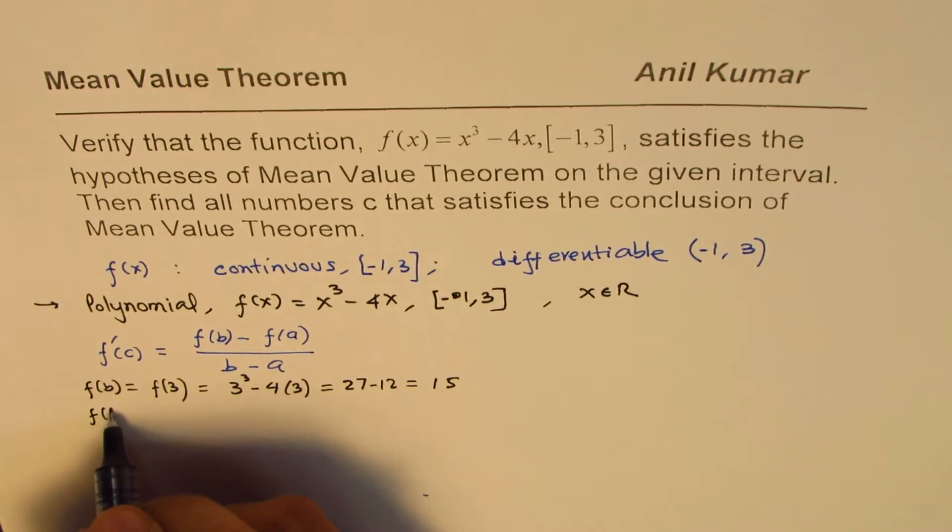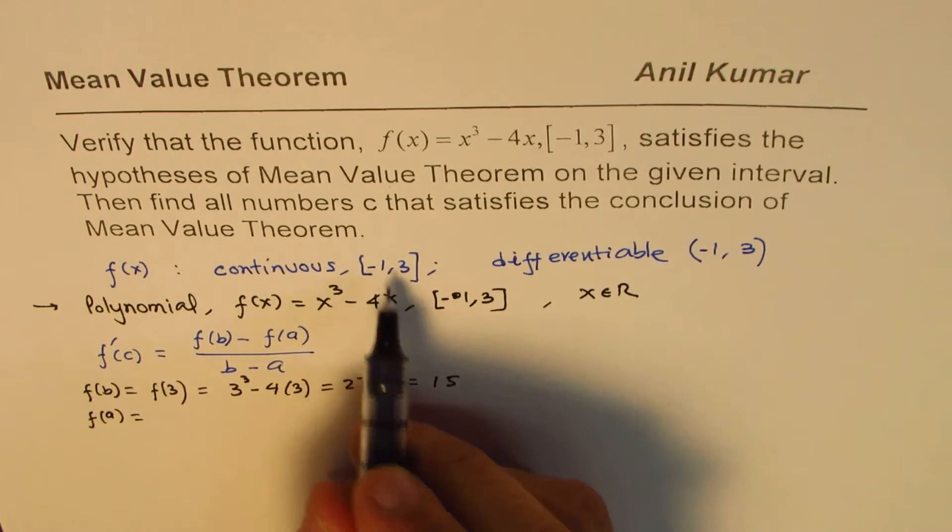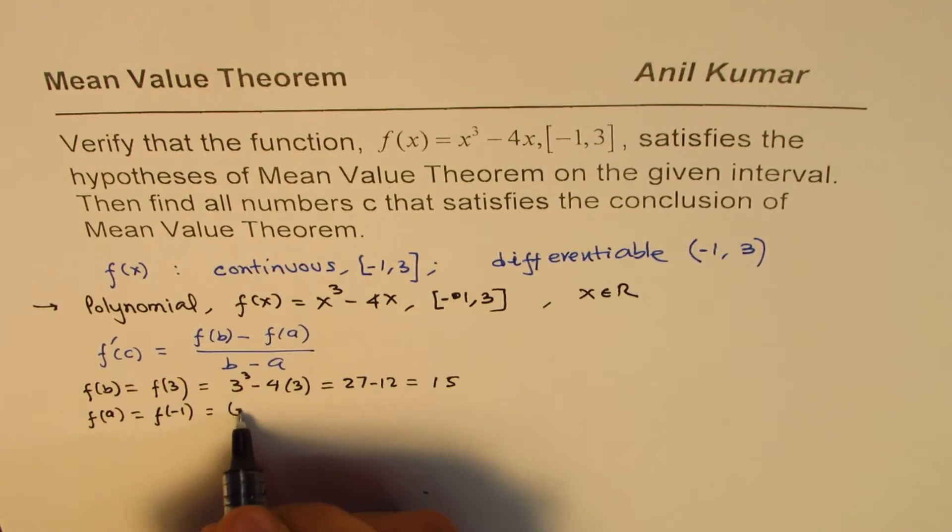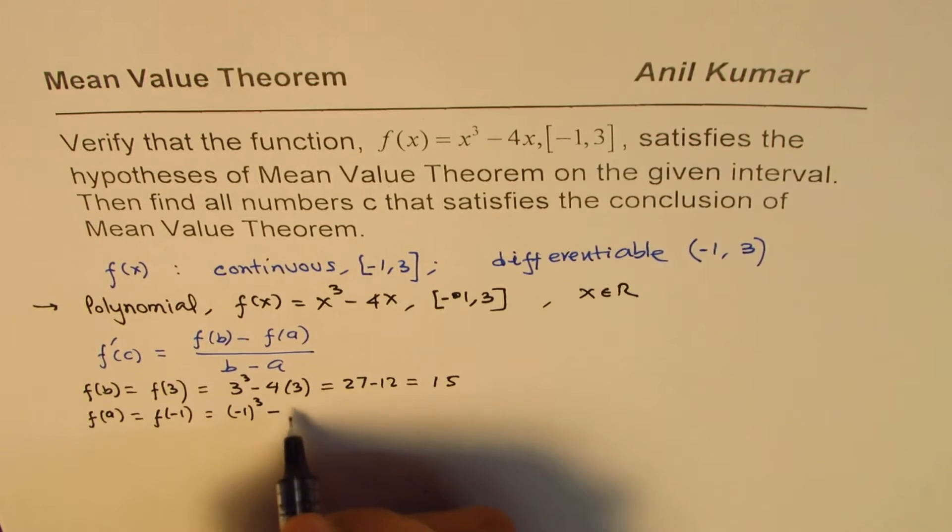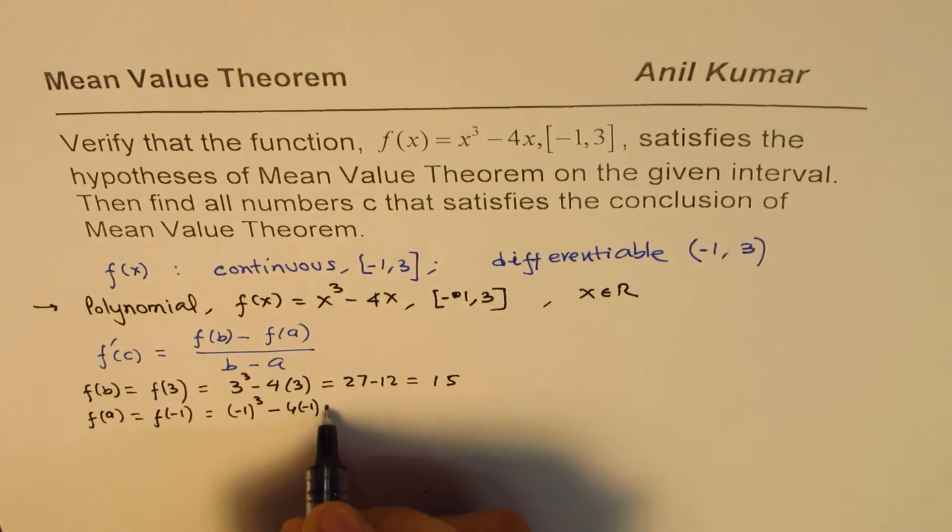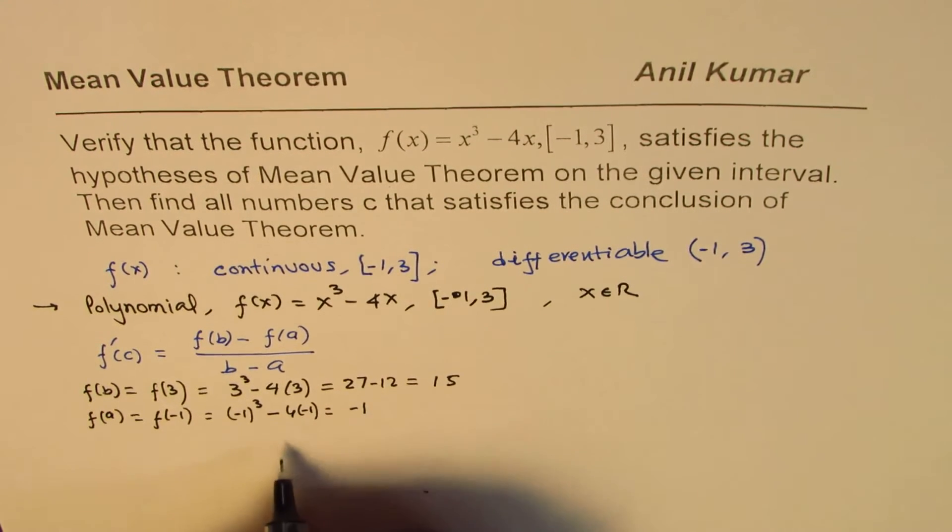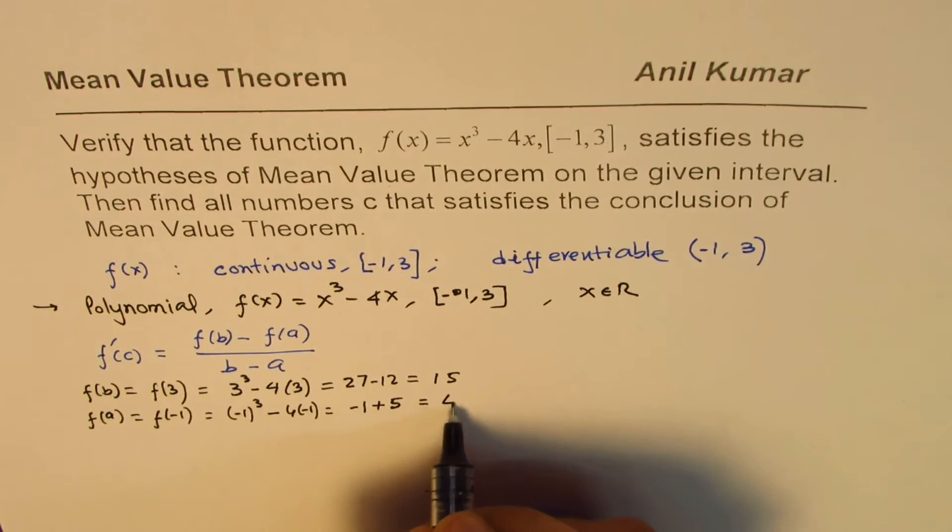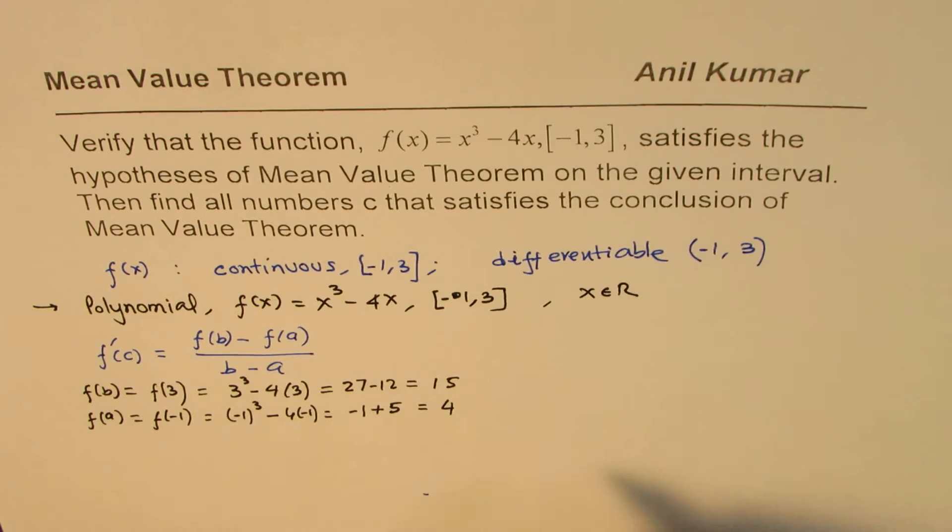And let's find what is f of a. a in this case is minus 1. So, f of minus 1, which is minus 1 cubed minus 4 times minus 1. So, that is minus 1, and that is plus 4. So, that is 3 for us.